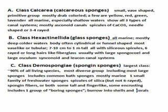The third class is Class Demospongia, known as spongin sponges. It is the largest class of Phylum Porifera — 90 percent of living species of Porifera belong to Demospongia. It is the most diverse group, including most large sponges such as the common bath sponge. Mostly they are marine, but one small family lives in fresh water — Spongillidae. They have spongin spicules and silica but do not have six-rayed spicules. Spongin fibers or both are present; some are tall and finger-like. One group, boring sponges, grows into shells and corals.